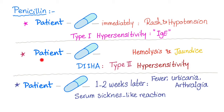Second scenario: patient takes penicillin and develops hemolysis and jaundice. What's the diagnosis? This is drug-induced immune hemolytic anemia, a type 2 hypersensitivity reaction — cytotoxic.